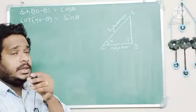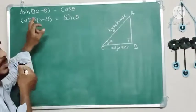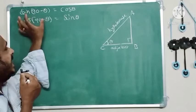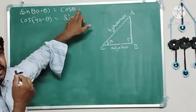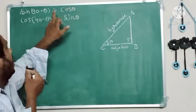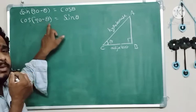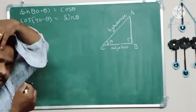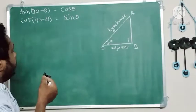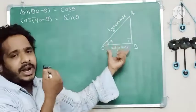Today in this video I am going to explain why sin(90 minus theta) equals cos theta, and why cos(90 minus theta) equals sin theta. To do this we need one right triangle.